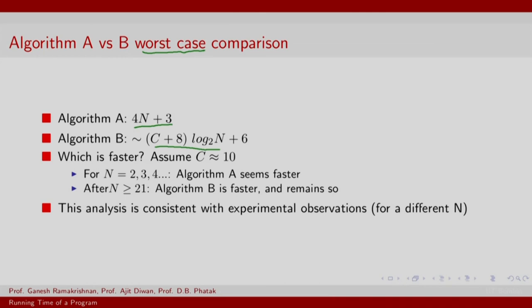One might jump and conclude that log to the base 2 of n is smaller than n, but please remember that we have a whole bunch of other factors sitting here. So assuming that C equals 10 and let us take small values of n such as n equals 2, you will find that for n equals 2, 4n plus 2, which is 11, is actually less than 18 times log to the base 2 of 2, which is 1, 18 plus 6. So for 2, and in fact likewise for 3 and for 4, algorithm A actually is faster. In fact, this goes on for n up to 20.